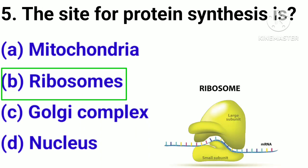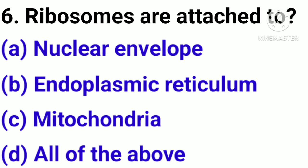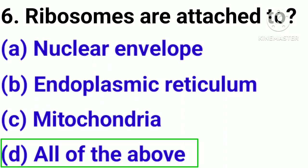Correct answer: option B, Ribosomes. Question number 6. Ribosomes are attached to: option A, Nucleus; option B, Endoplasmic reticulum; option C, Mitochondria; option D, All of the above.